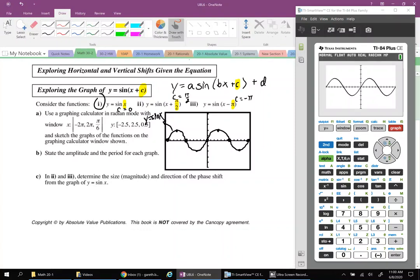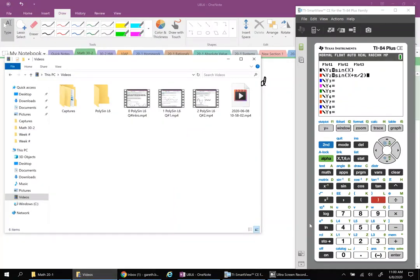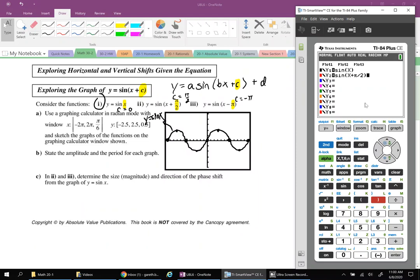Okay, next up: y equals sine x plus pi over 2. And now once we hit graph, we're going to be able to see what that c parameter does.